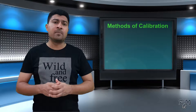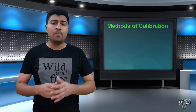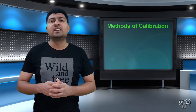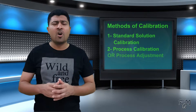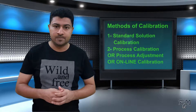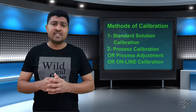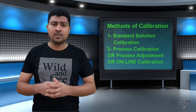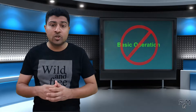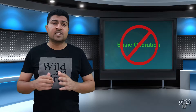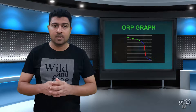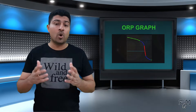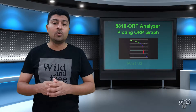Now we discuss about the calibration methods. It has two main calibration methods: number one, standard solution calibration, and second is process calibration, or process adjustment, or sometimes known as online calibration. These methods are the same as any ordinary analyzer. In this part I will not discuss about the basic operation of the analyzer or about the ORP graph. I will only focus on the calibration procedure. If you want to know about basic operation or about the ORP graph, I recommend you to watch the third part of this analyzer, which is related to plotting the ORP graph.